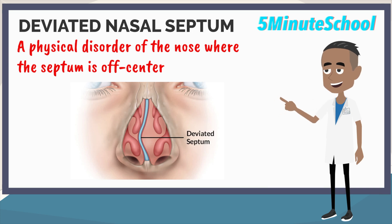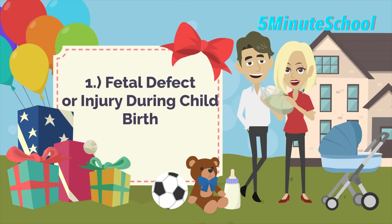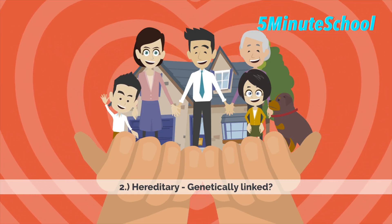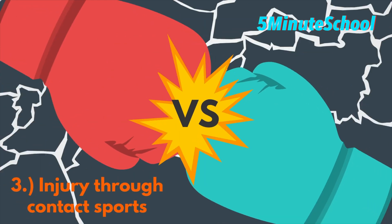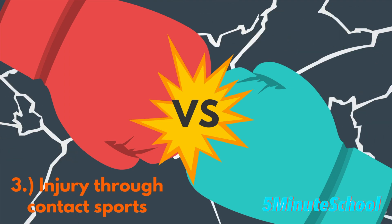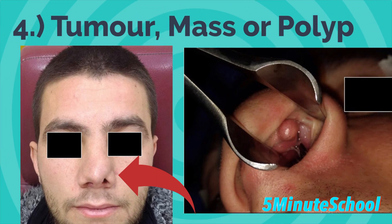The causes of a deviated nasal septum include being present at birth — occurring through fetal development or some kind of injury during childbirth. It may be hereditary and genetically linked. It could be caused by injury to the nose, especially in those who play contact sports like boxing, which is the most common cause. Lastly, it could be caused by a tumour, polyp, or mass in the nose pushing the nasal septum to one side.